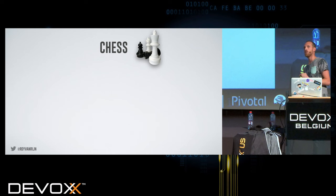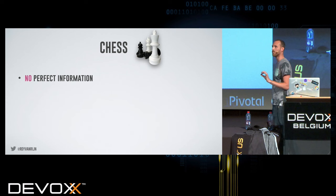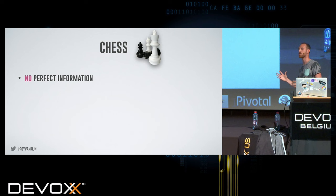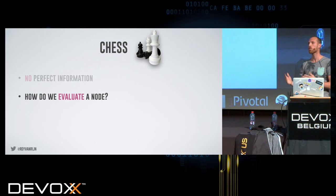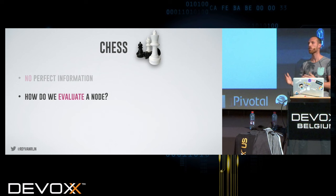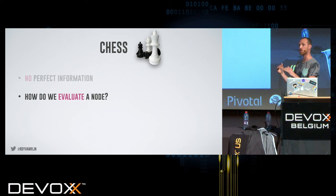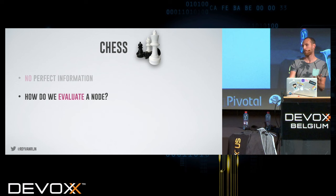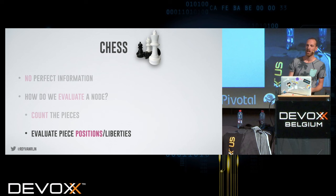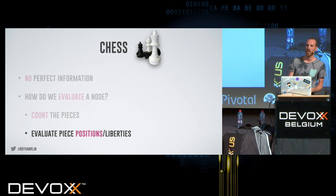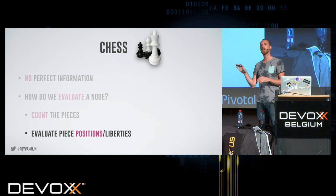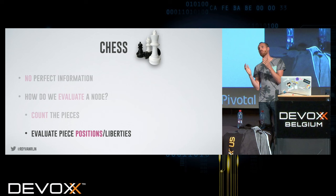What's the problem with chess? There's no more perfect information — it's impossible to calculate all positions and go to the end, because the number of combinations is mind-blowingly large. The question is, how do we evaluate a node, since we can't compute to the end? Luckily, chess has a simple evaluation: you can just count the pieces. If you lost the queen, you're probably not ahead. You can also look at piece positions and liberties — if your pieces are in the center it's probably better than being in the corner. Writing an evaluation function for chess isn't that hard.